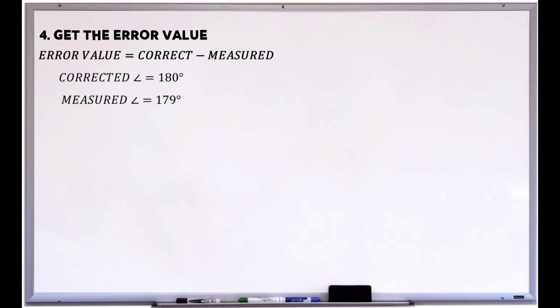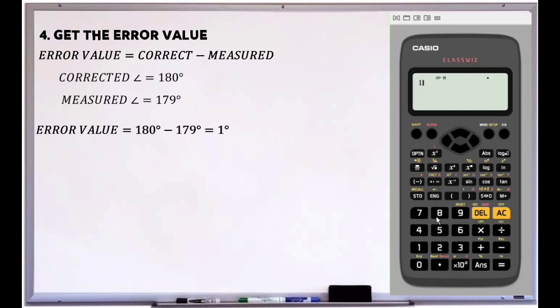So in the given problem, the corrected angle is 180 degrees, and the sum of the given angle is 179 degrees. So error value equals 180 degrees minus 179 degrees. And the value of error is 1 degree.